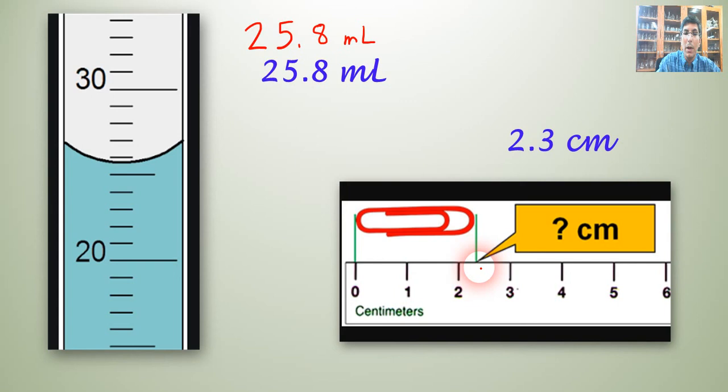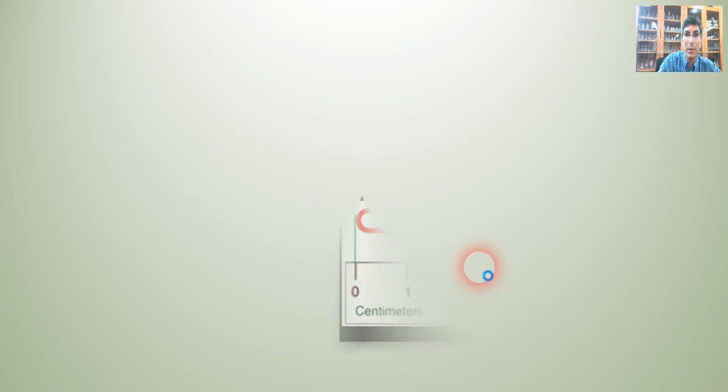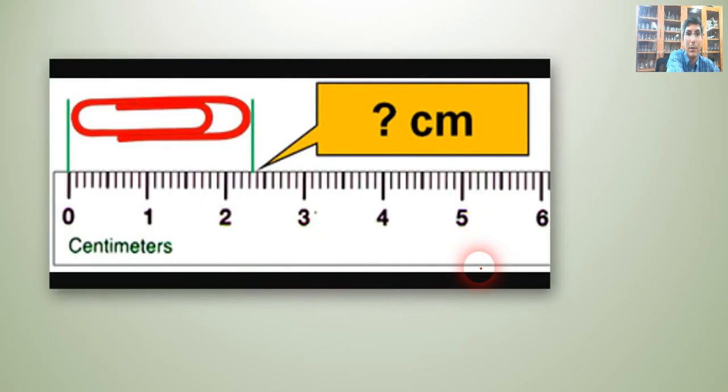Now, notice that if you have a better ruler, let's say we have the exact same paper clip. But this time we have a ruler that reads, you know, it has little graduations for each tenth of a centimeter. Well, that means now we can be more precise in our measurement. We can read to that extra decimal place. It means you have to squint, but you're going to have to be able to read that.